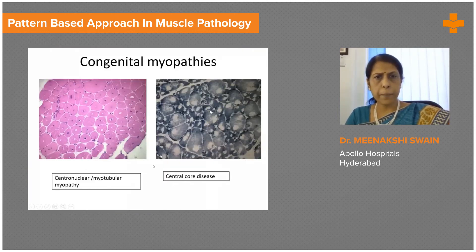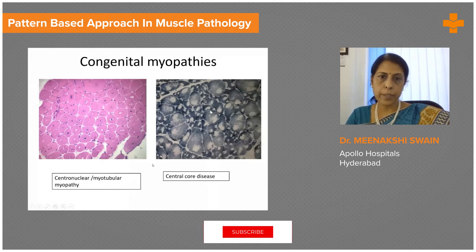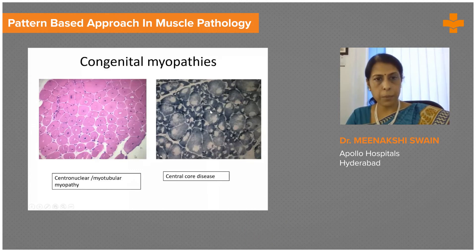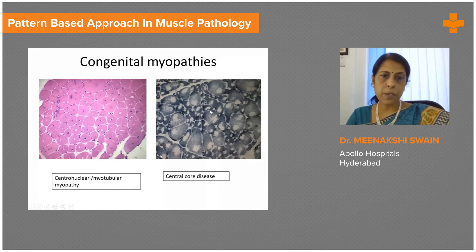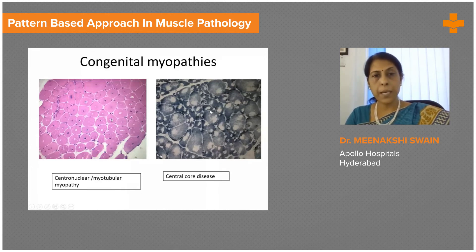In this group of chronic myopathic changes we also have the congenital myopathies, because these are chronic and often slowly progressive. The commoner entities include centronuclear myopathy. As the name indicates, there are numerous fibers with central nuclei — normal muscle usually has peripheral nuclei, but in this condition almost 80 to 90% of fibers would have central nuclei. So this is one congenital myopathy where the H&E itself is a giveaway to the diagnosis.